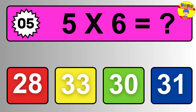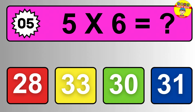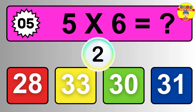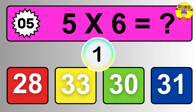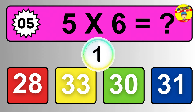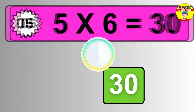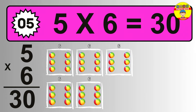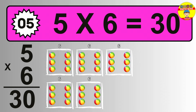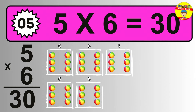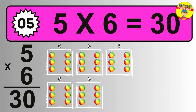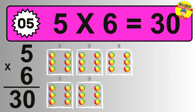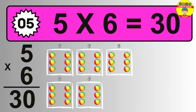Question five. Five times six equals what? The answer is five times six is thirty. To calculate, we have five groups with six balls each one. So how many balls do we have? Thirty balls.